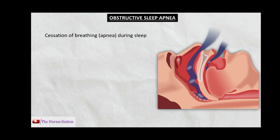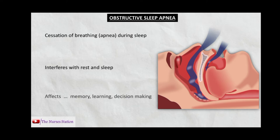OSA is a condition in which breathing stops involuntarily for brief periods of time during sleep. The normal flow of air is repeatedly stopped throughout the night because the airway space in the area of the throat is too narrow. This interferes with the person's rest and sleep and affects memory, learning, and decision making.